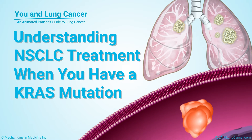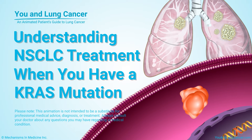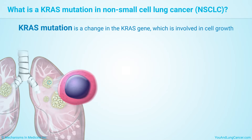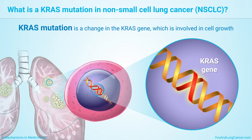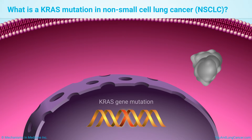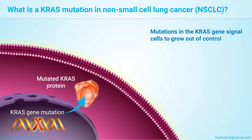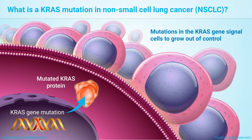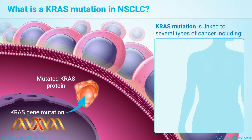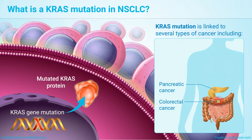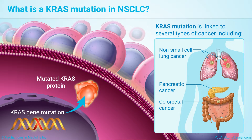Understanding Non-Small Cell Lung Cancer Treatment When You Have a KRAS Mutation. A KRAS mutation is a change in the KRAS gene, which is involved in cell growth. Mutations in this gene signal cells to grow out of control. This is linked to several types of cancer, including colorectal, pancreatic, and non-small cell lung cancer, or NSCLC, where it is the most common cancer-causing mutation.